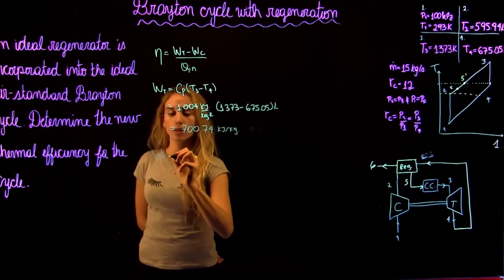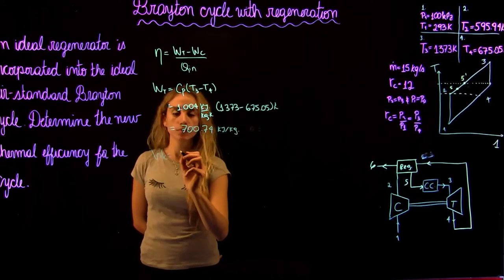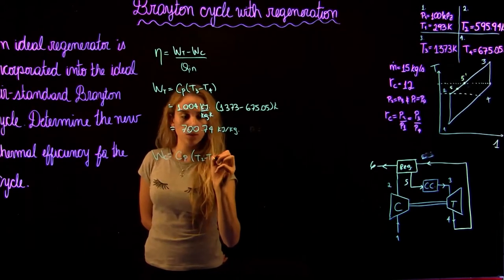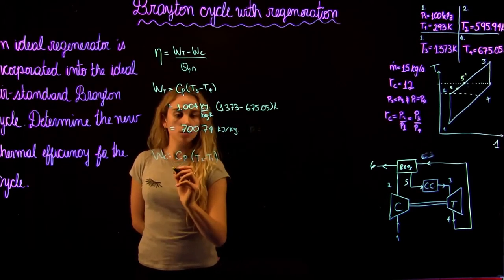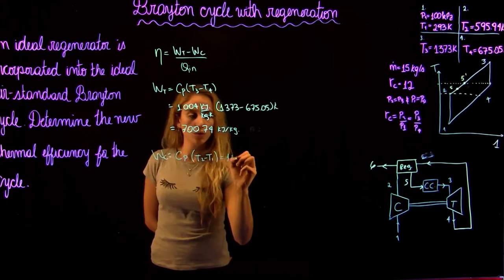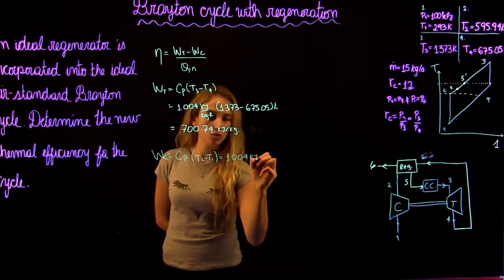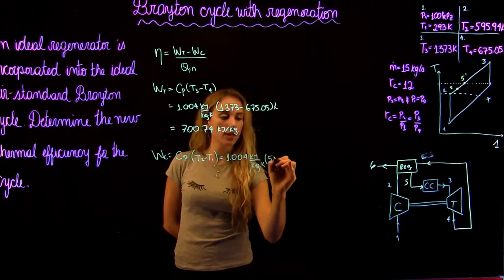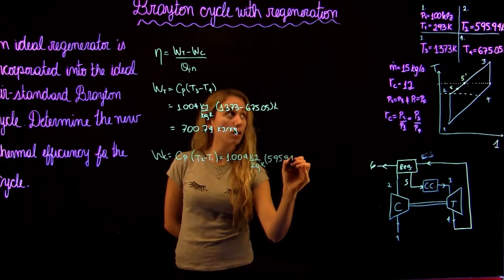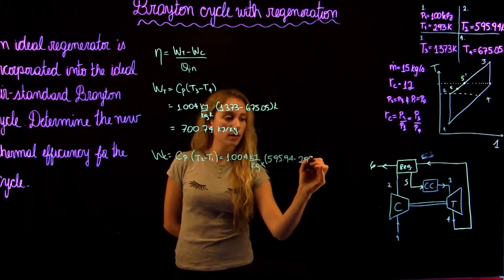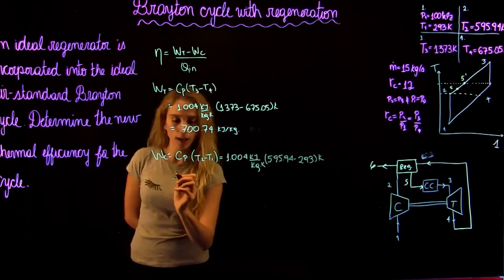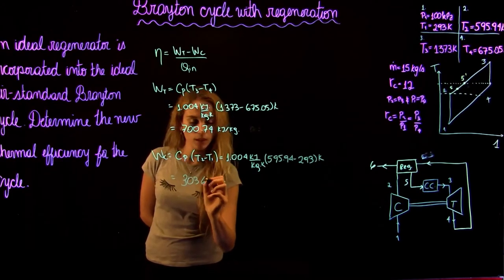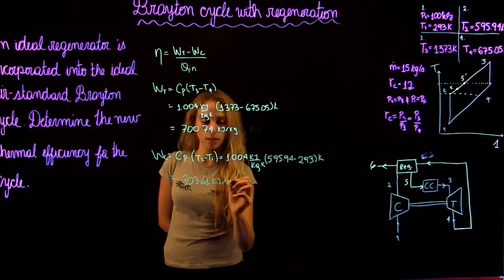For the work of the compressor, it equals Cp × (T2 − T1). That's 1.004 kJ/(kg·K) × (595.94 − 293) K, which gives us a compressor work of 303.61 kJ/kg.